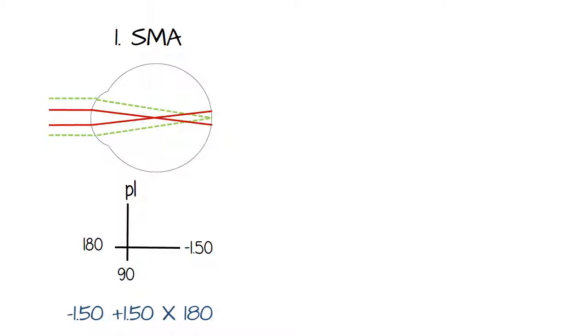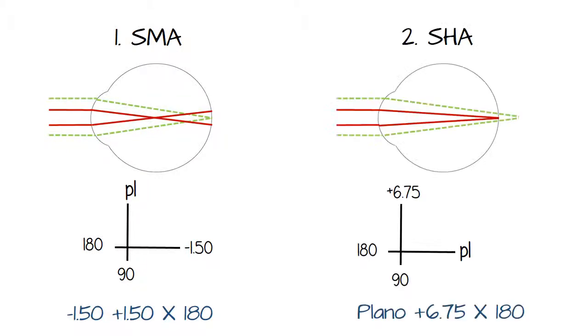So if you look at those two numbers, you can tell what type of astigmatism. Simple hyperopic, we have a plano that corresponds to the focal line that's already on the retina, and then a plus to bring the one that's behind the retina onto the retina. Because plus is what we use to correct hyperopia.